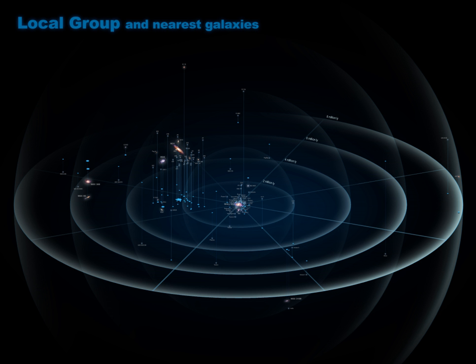The local group is the galaxy group that includes the Milky Way. The local group comprises more than 54 galaxies, most of them dwarf galaxies.